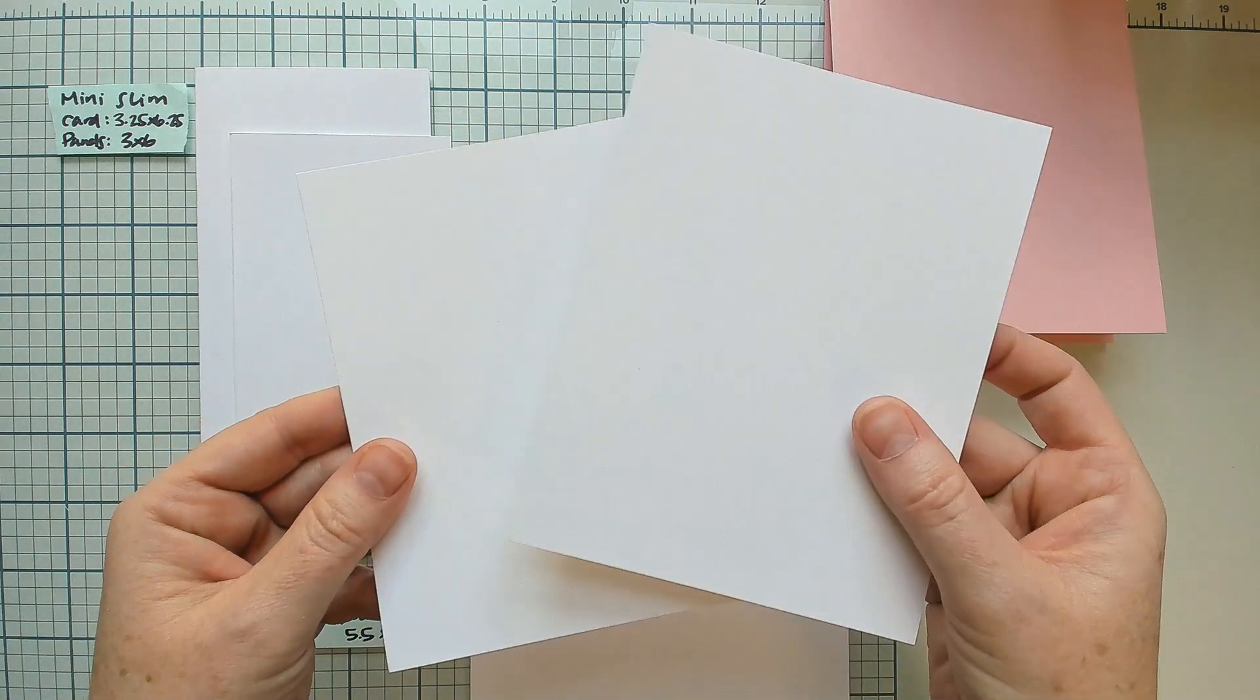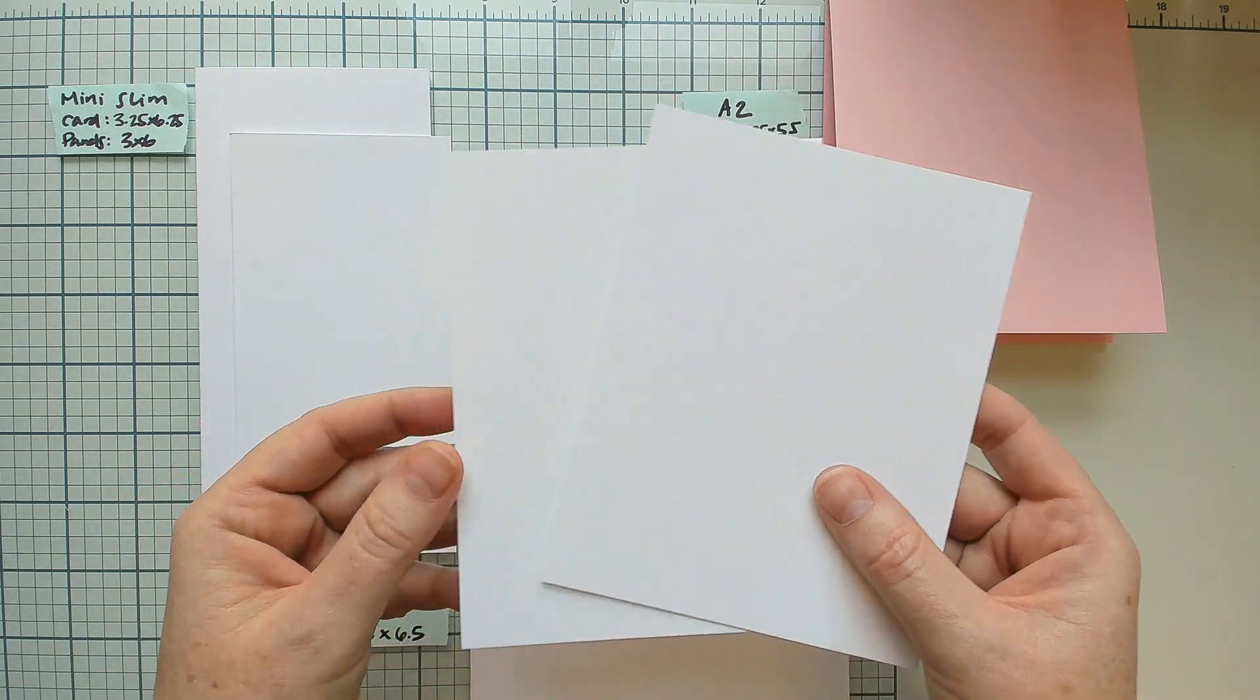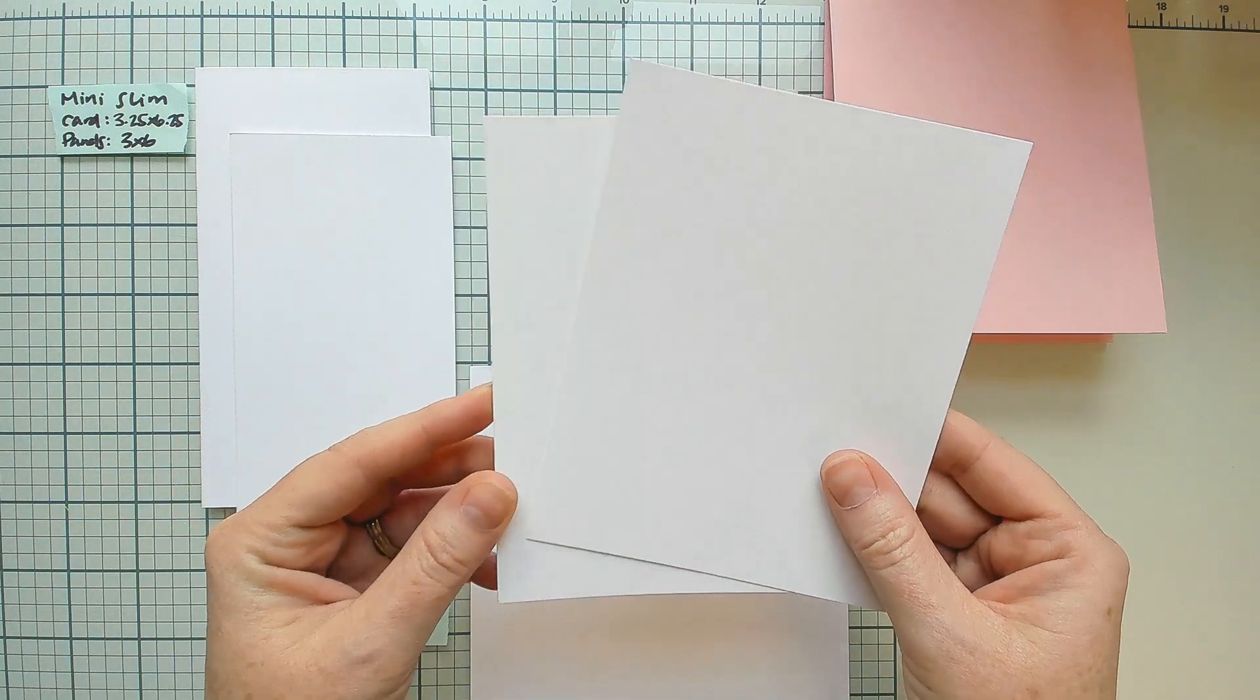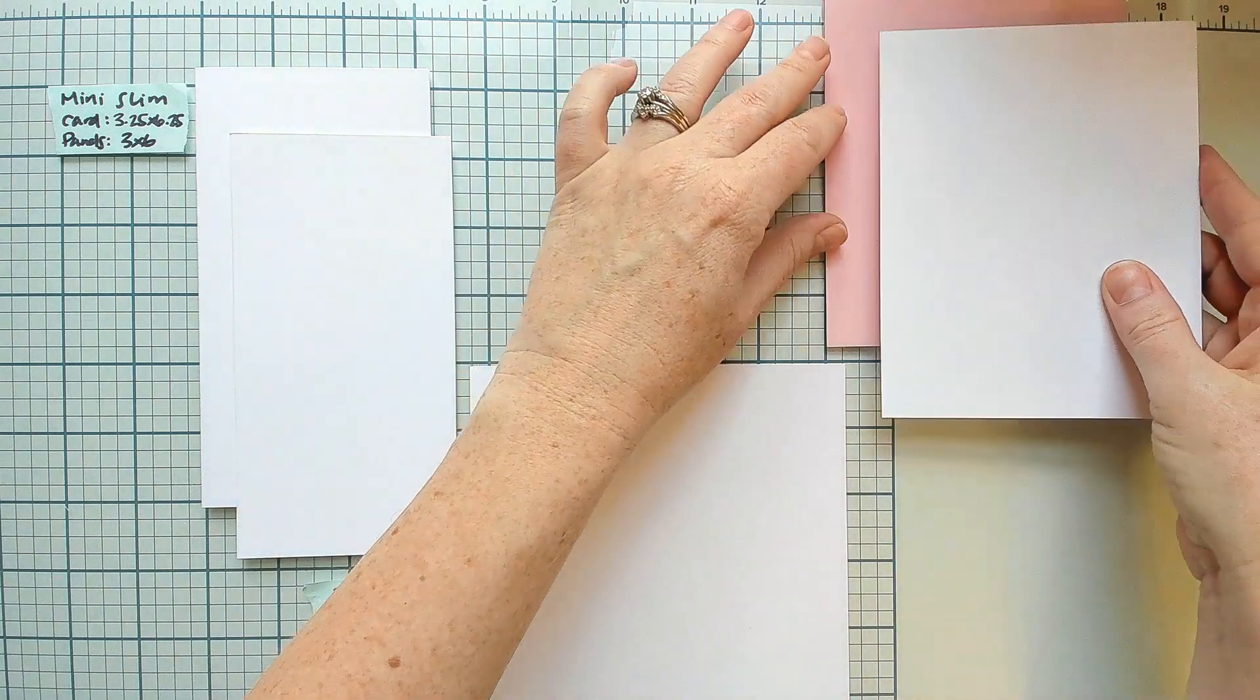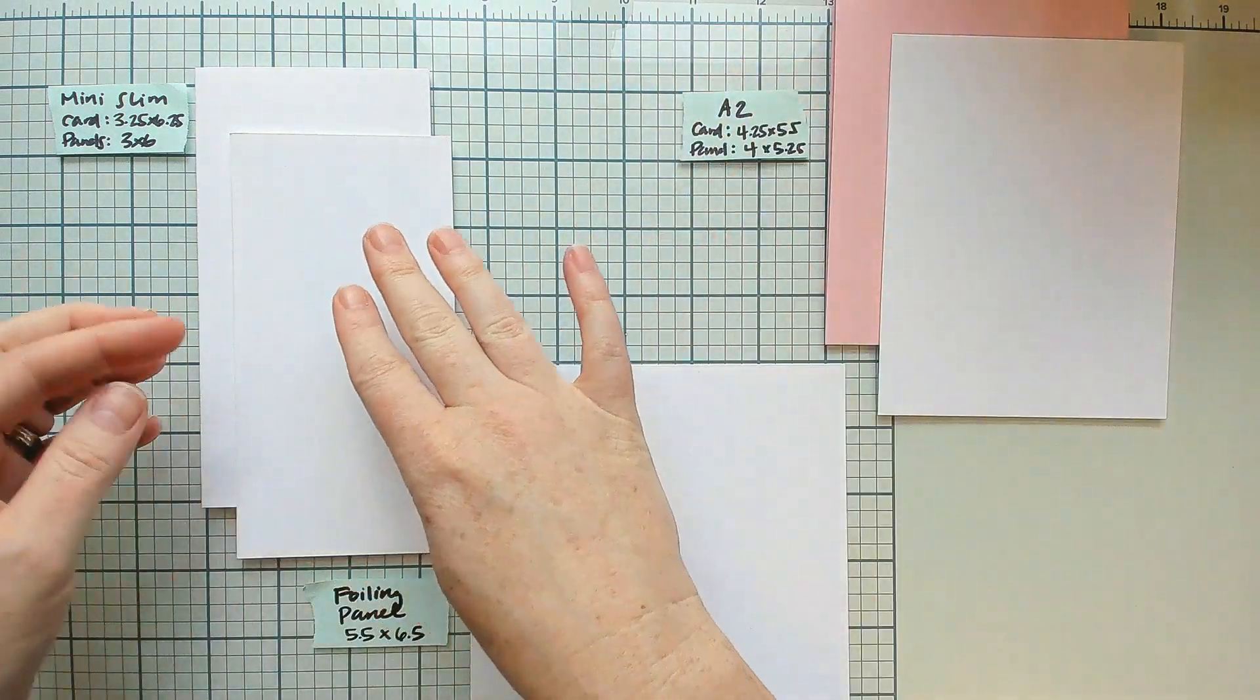I would also like you to prep two standard A2 sized panels from white cardstock. For reference, that is 4.25 by 5.5 inches in size.